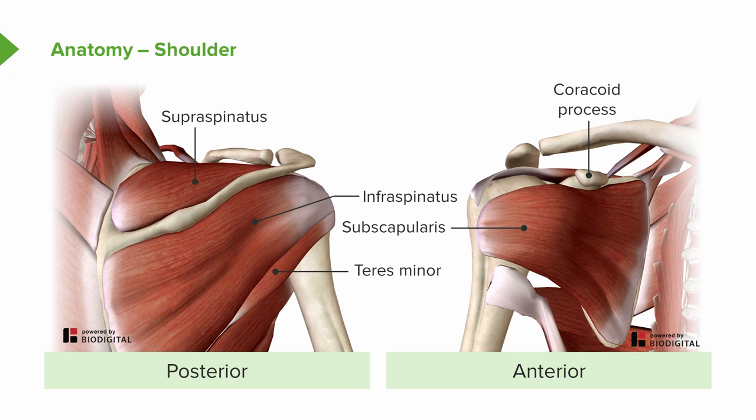You can also see that about four centimeters in from the end of the acromion, depicted on both the right and left images, is the acromioclavicular joint articulating with the clavicle on its way to the sternoclavicular joint.